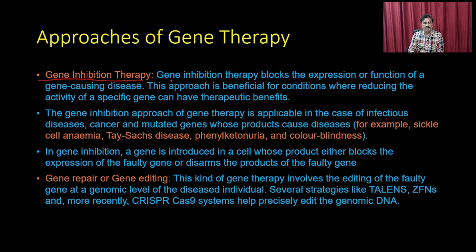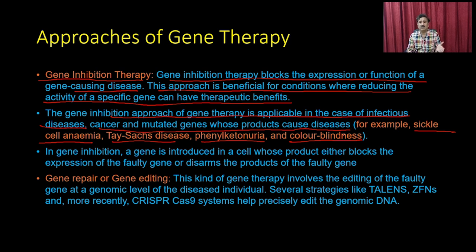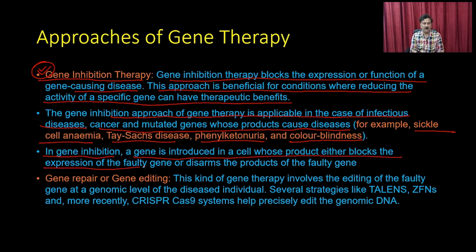The second approach is gene inhibition therapy, which blocks the expression or function of a gene causing disease. This is beneficial when reducing the activity of a specific gene has therapeutic benefits. It is applicable in cases of infectious disease, cancer, and mutated genes whose products cause disease — for example, sickle cell anemia, Tay-Sachs disease, phenylketonuria, and color blindness. An inhibitory gene is introduced into the whole cell to block the expression of the faulty gene or disarm its products.